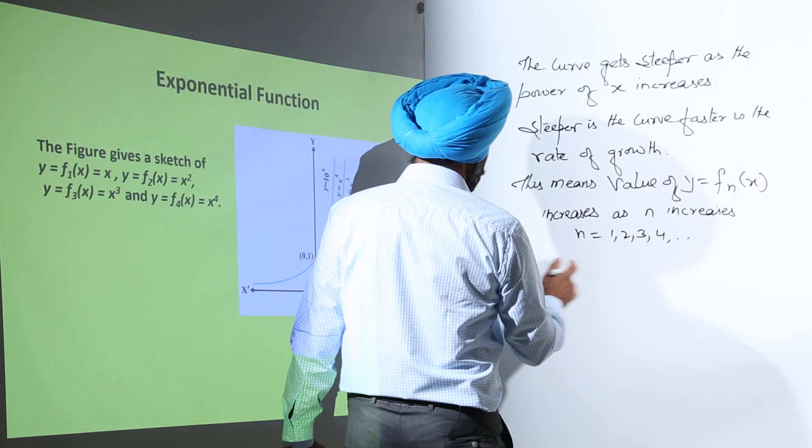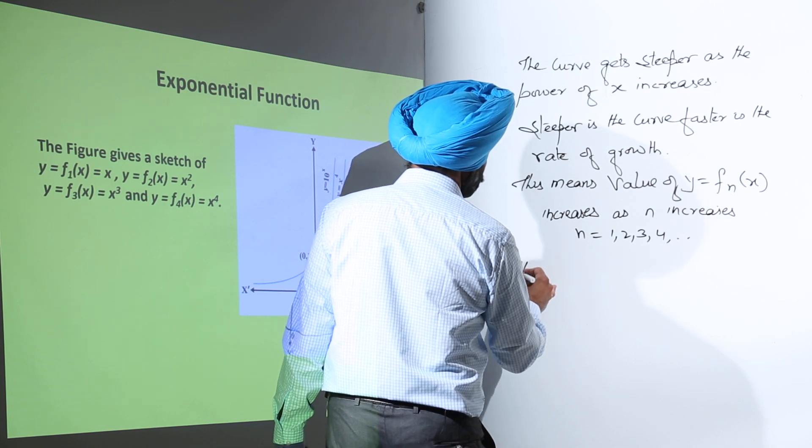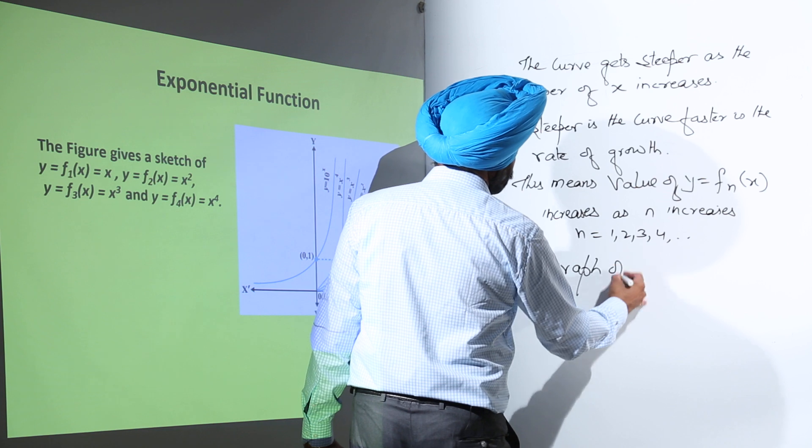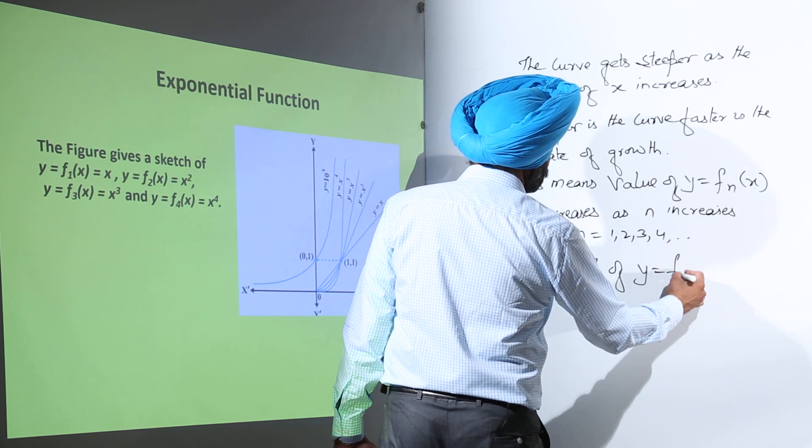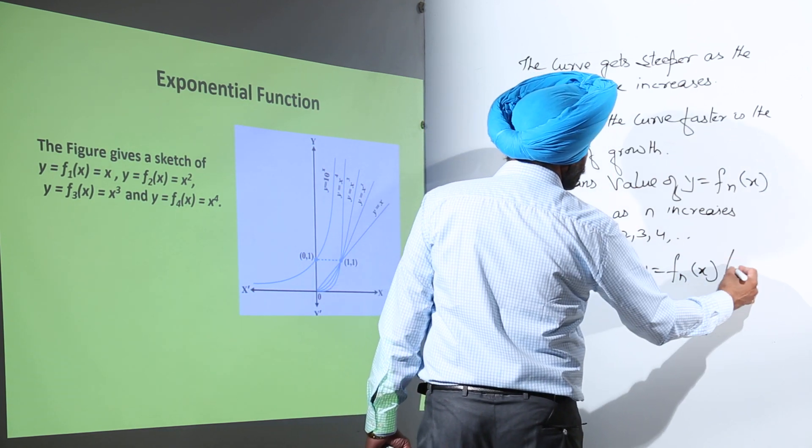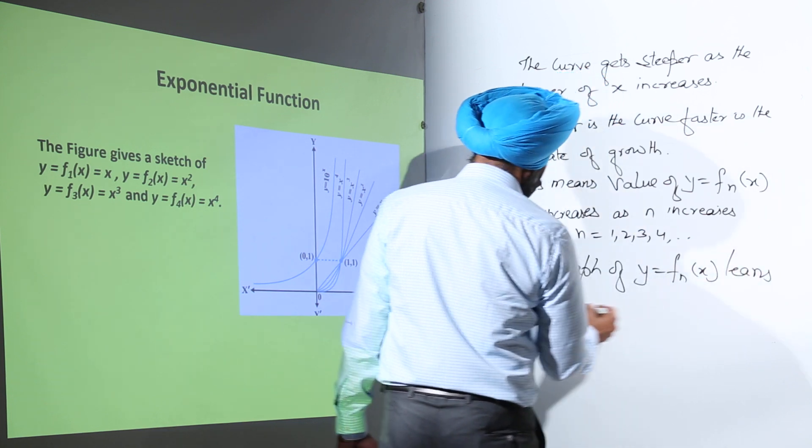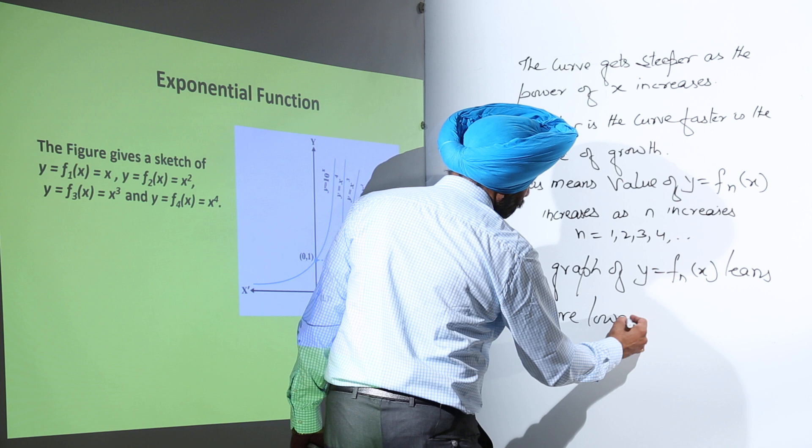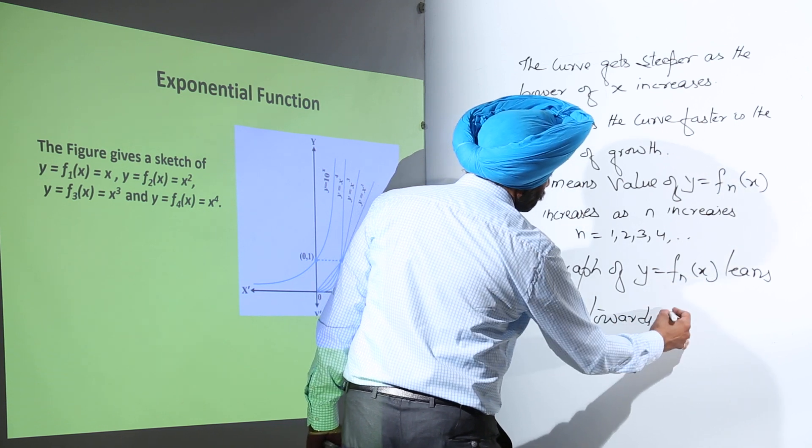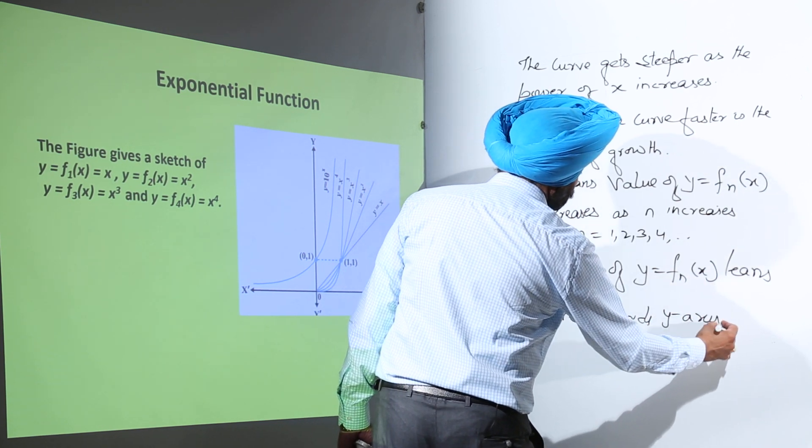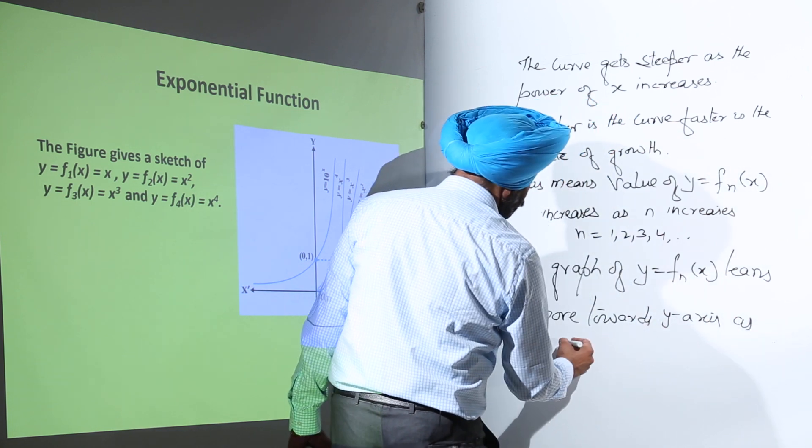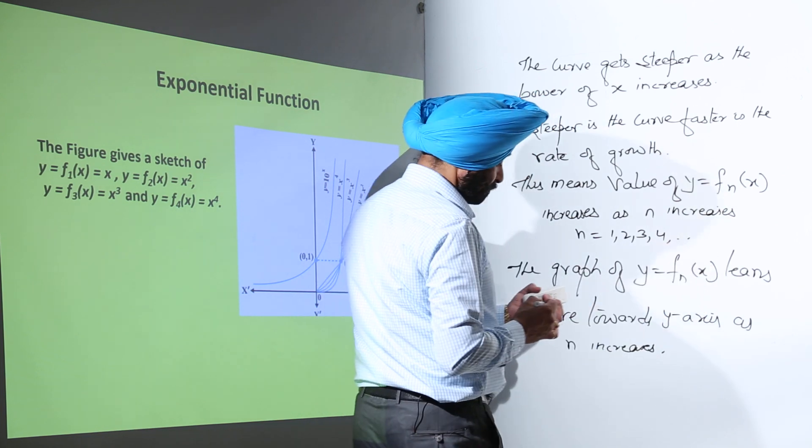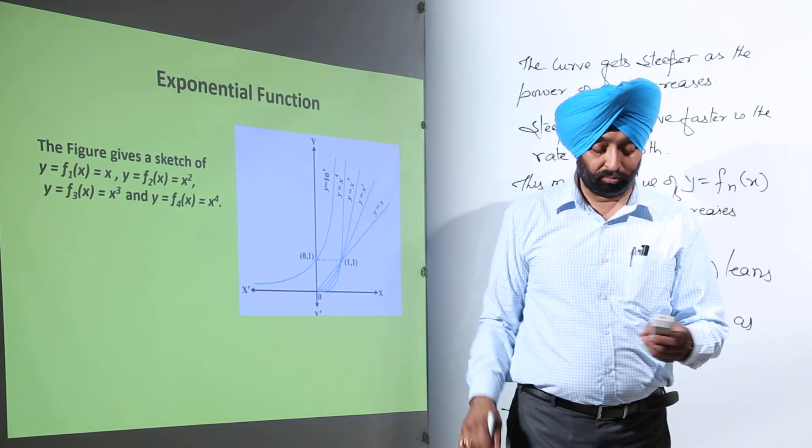So that also we can write it. Now, the graph of y equals fn(x) leans more towards y-axis as n increases, as power of x increases, one and the same thing.